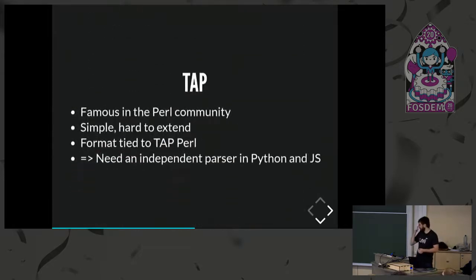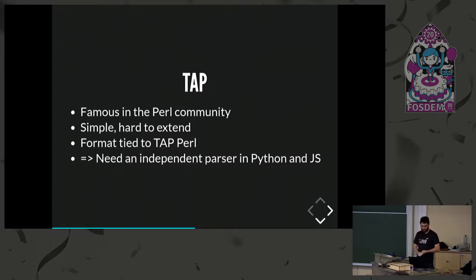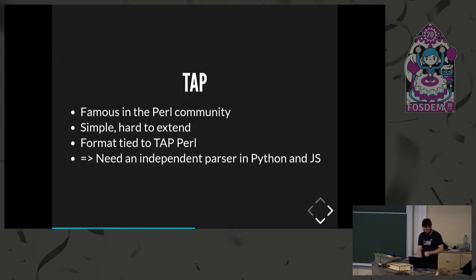You also have TAP, which is mostly famous in the Perl community. It's simple but extensible. Its format is also tied to the TAP Perl implementation — there's no independent definition of it — and it needs an independent parser in both Python and JS. So it was not ideal.